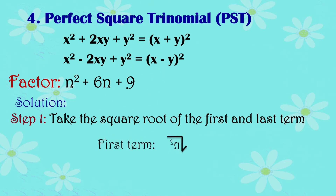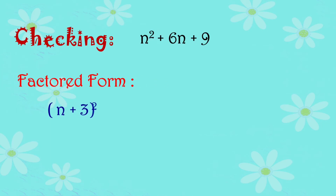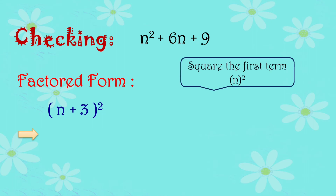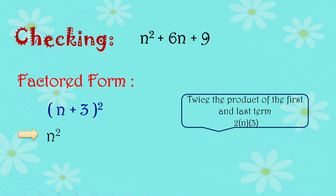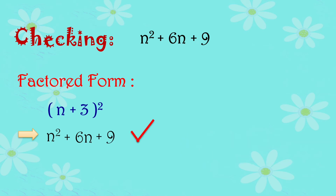Substitute the square roots into the pattern. Since all signs are positive, we use quantity n plus 3 raised to 2. Checking using the shortcut: square the first term to get n squared, twice the product of the first and last term gives 6n, and squaring the last term gives 9. This matches, so our answer is correct.